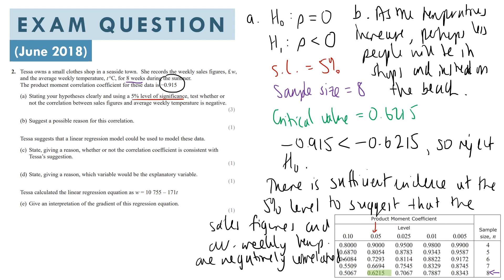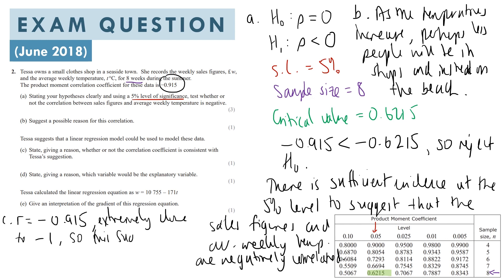For part C, Tessa suggests that a linear regression model could be used to model these data, and we must state with a reason whether or not the correlation coefficient is consistent with Tessa's suggestion. The correlation coefficient is minus 0.915, which is extremely close to minus 1, so this suggests a linear regression model is highly likely to be suitable.